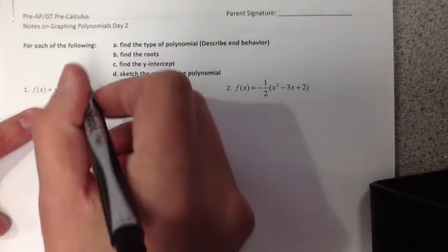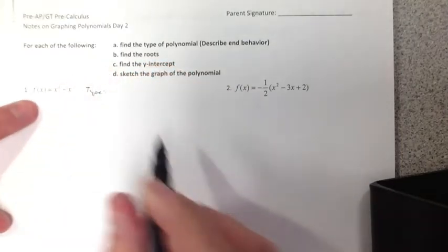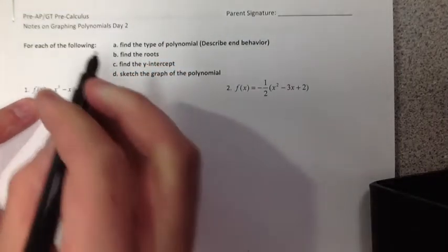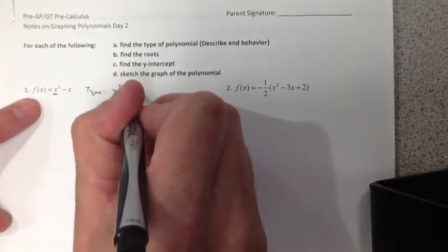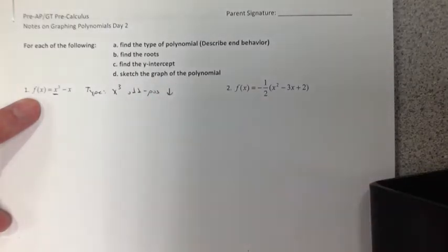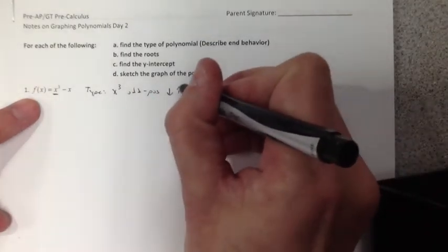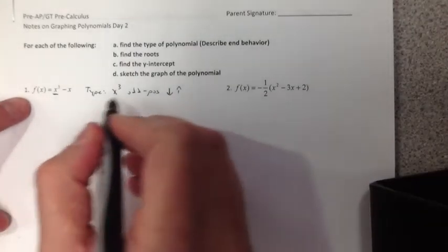Now the nice thing about this form, for part A to get the type, it's very easy. The lead coefficient is x³. That tells me it's odd positive. And remember what odd positive looks like? It starts negative and goes up. So it looks like a cubic graph. So we have the type already.